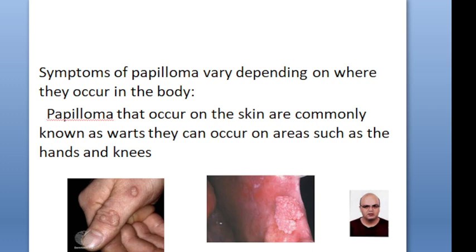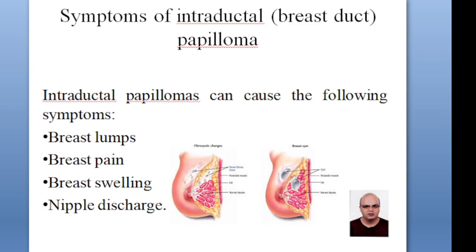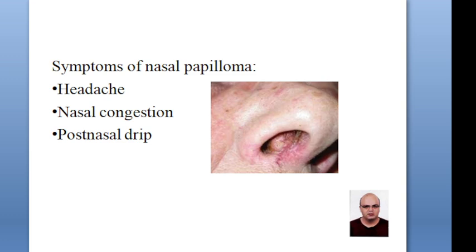Symptoms vary depending on where they occur in the body. If they occur on the skin, they are commonly known as warts that can appear on areas such as hands and knees. Symptoms of intraductal breast papilloma include lumps, pain, swelling, and discharge.